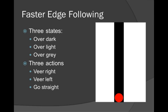Now I'm going to cover some ways to make your line following program even faster than its current slow method. As you can see from the last video, a line following program that's just done in the basic way of two states goes fairly slowly. So here's a way to make your program faster.